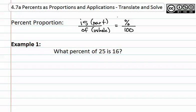This means we need to identify each of the parts. We have the of and we have the is. The is is the part and it goes in the numerator. The of is the whole and therefore goes in the denominator.